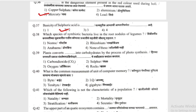Which species of symbiotic bacteria live in the root nodules of legumes? (Shimbivargiye vanaspatichya mula oril gaathit konthya prajatichya sahajivin zivanu raata?) The options are Nostoc, Rhizobium, Anabaena, or Azolla. The answer is Rhizobium.